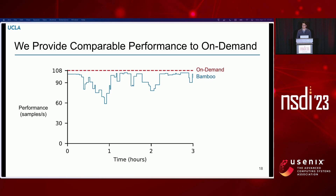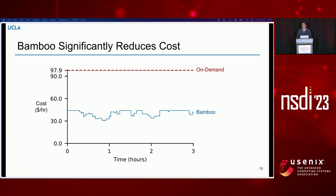We ran BERT large on a set of spot instances for three hours. Performance is on the y-axis and time on the x-axis. Compared to the on-demand baseline shown in red at the top, Bamboo has very variable performance that changes over time due to the nature of preemptible instances, but the average performance still remains close to that of on-demand. It achieves significantly lower cost — largely due to the decreased price of spot instances and the lower average number of instances due to preemptions — resulting in around two times the value of the on-demand baseline.